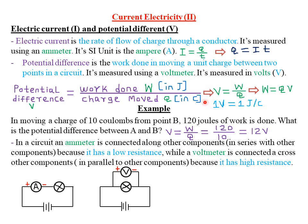Let's look at an example applying the formula V = W/Q. We are given that in moving a charge of 10 coulombs from point A to point B, 120 joules of work is done. What is the potential difference between points A and B? V = W/Q = 120 joules ÷ 10 coulombs = 12 volts.